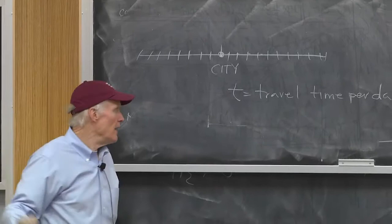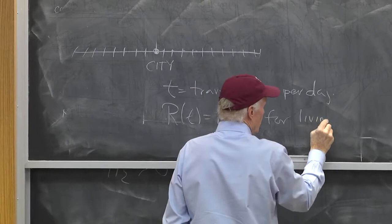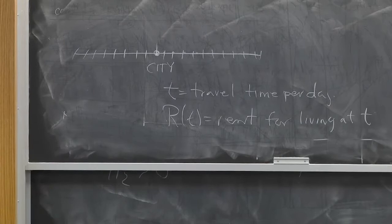I'm going to let R of T equals the rent that you pay to live at T. So to live at a location with distance T, you've got to pay R of T.